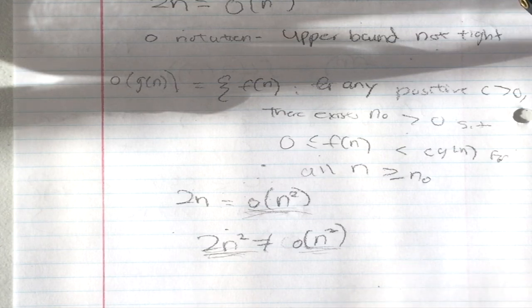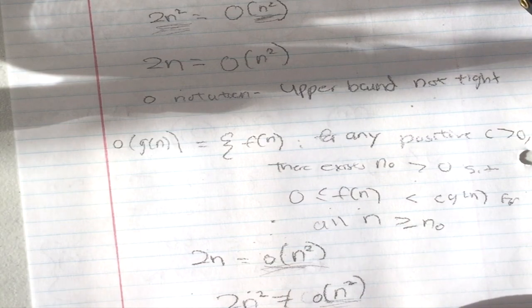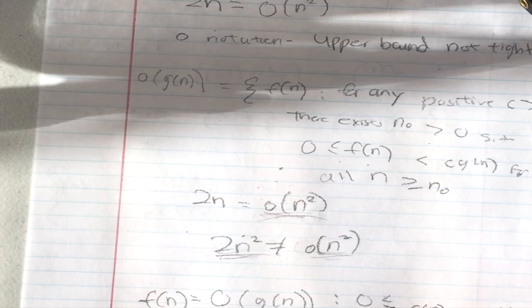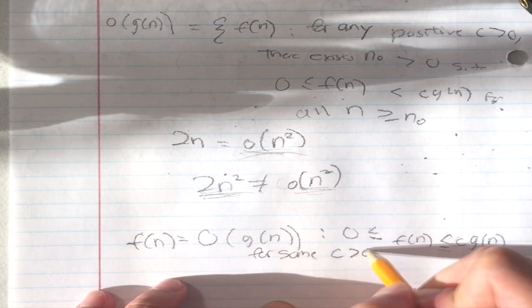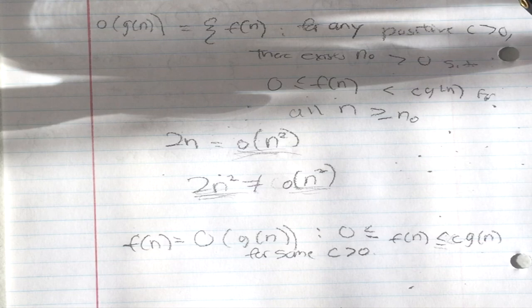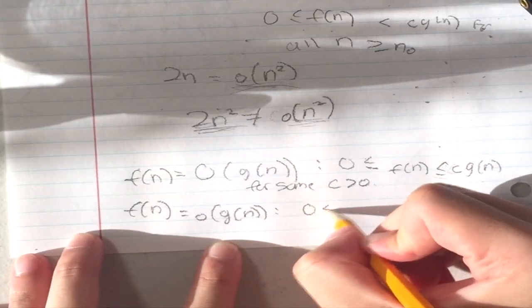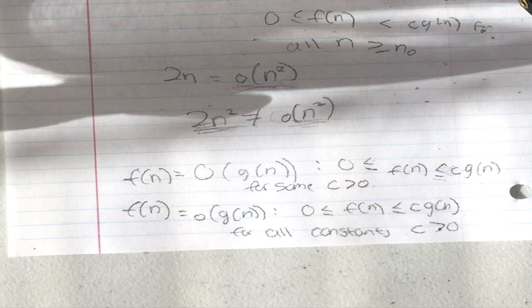Big-O and little-o are similar, but the main difference is: for Big-O, the bound holds for some constant c > 0, whereas for little-o, the bound holds for all constants c > 0. So f(n) is Big-O of g(n) when c·g(n) bounds it for some c, but for little-o, f(n) < c·g(n) for all c > 0. In little-o notation, f(n) becomes insignificant relative to g(n) as n approaches infinity.